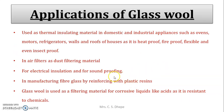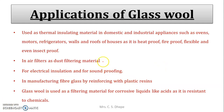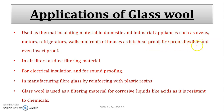Applications of glass wool: it is used as a thermal insulating material in domestic and industrial appliances such as ovens, motors, refrigerators, and in the walls and roofs of houses, because it is heat-proof, fire-proof, flexible, and insect-proof.